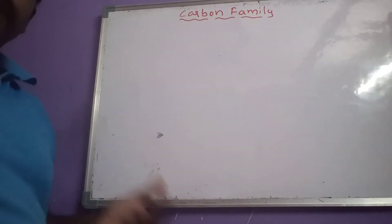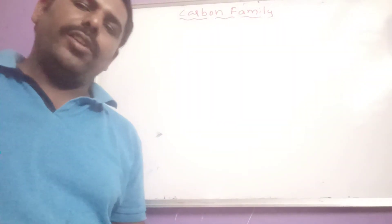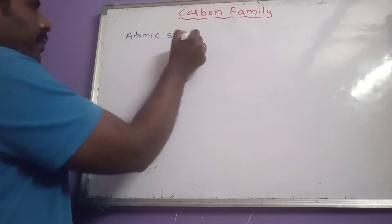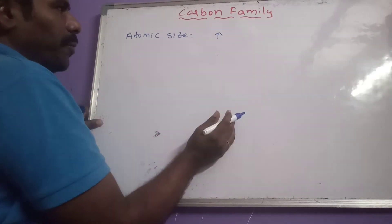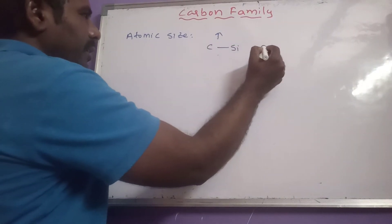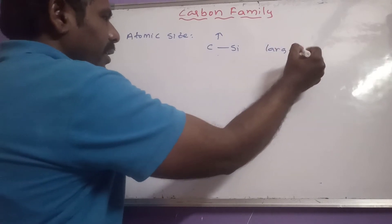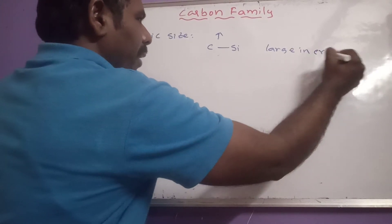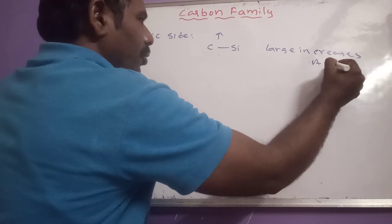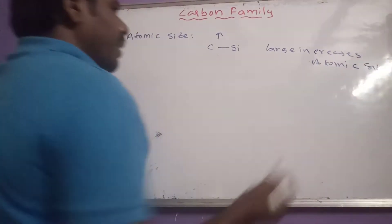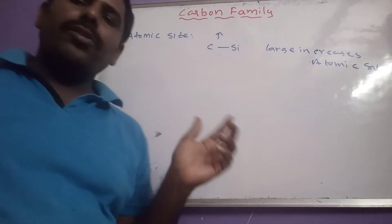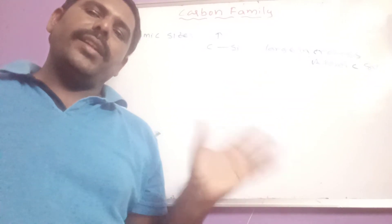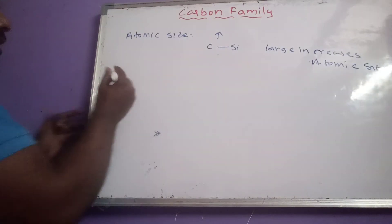Now let us see the general properties of these 4th A group elements. First, atomic size increases from top to bottom. However, from carbon to silicon there is a large, sudden increase in atomic size — similar to the sudden increase from boron to aluminum in the 3rd A group. Thereafter, the increase in atomic size is somewhat less pronounced.